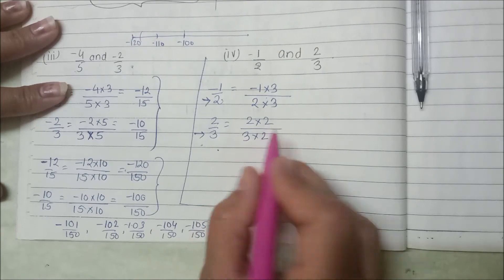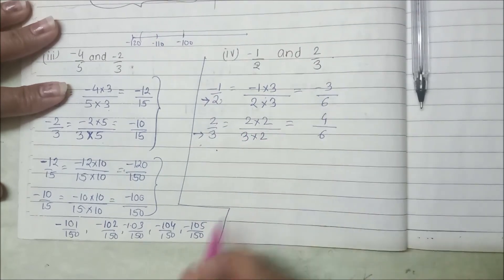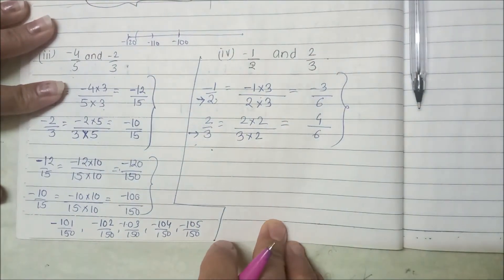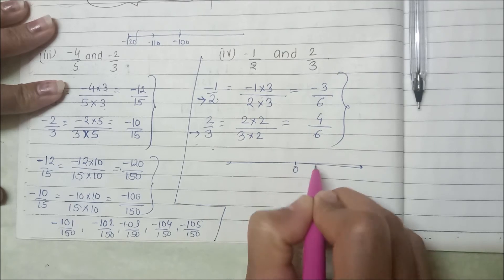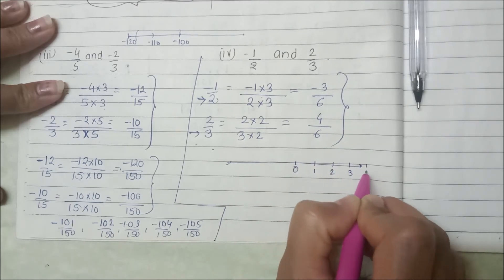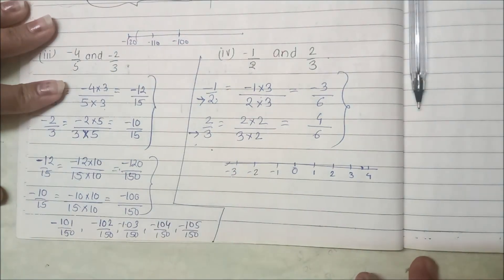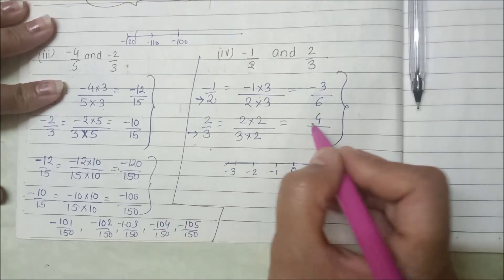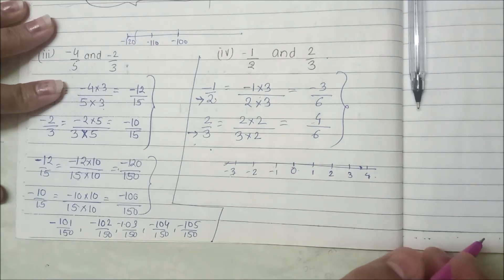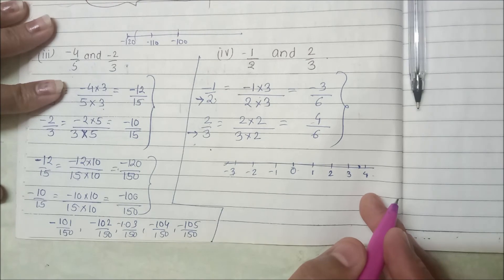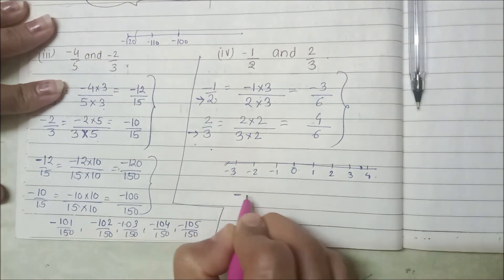We have to multiply by 2 below, so we also multiply by 2 on top. What will happen? Denominator becomes 6, giving minus 3 upon 6. Here also denominator is 6, and 2 times 2 gives 4, so we get 4 upon 6. Now between these two — minus 3 upon 6 and 4 upon 6 — we can find 5 rational numbers. On the number line, between 4 and minus 3, there are 6 numbers: 1, 2, 3, 4, 5, 6. We just need to keep the denominator as 6 and write any 5 numbers, such as minus 2 upon 6.